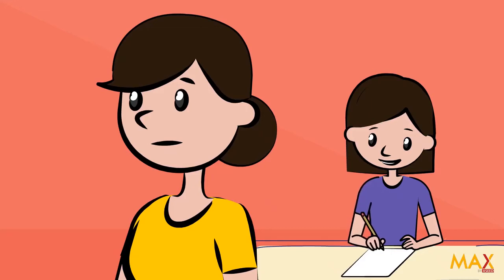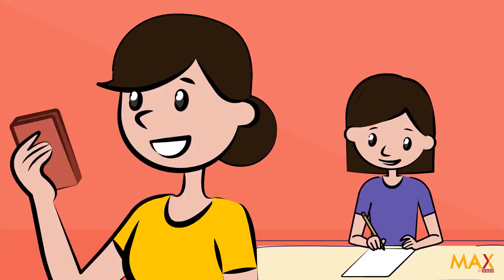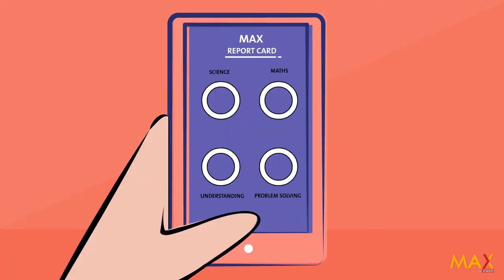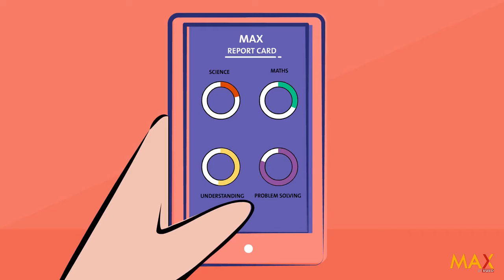Mrs. Raj is now used to receiving Max skill reports on her phone. It shows Divya's understanding score and problem-solving score in math and science.